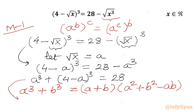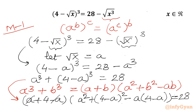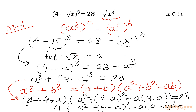Applying the identity to the LHS, I write (a + (4 - a)) in the first bracket — the a terms cancel giving 4 — and in the second bracket: a² + (4 - a)² - a(4 - a). The right-hand side remains 28. So we have 4 times [a² + (4 - a)² - a(4 - a)] = 28.